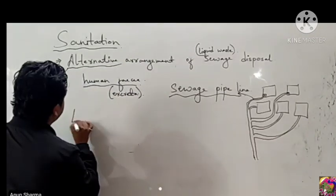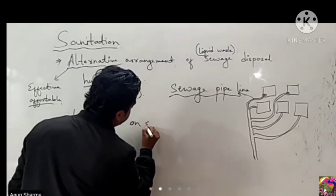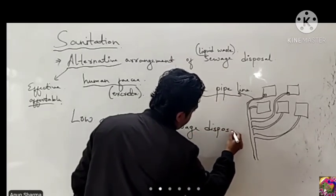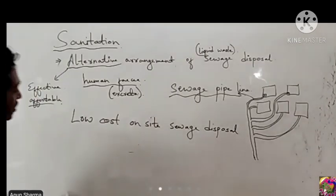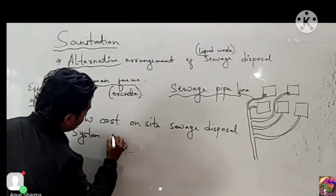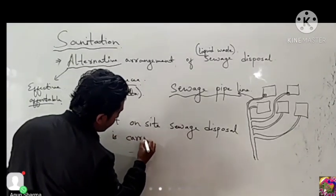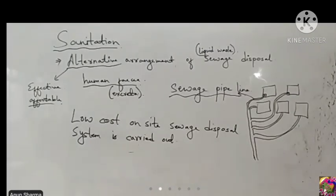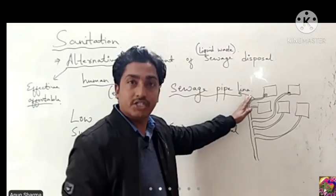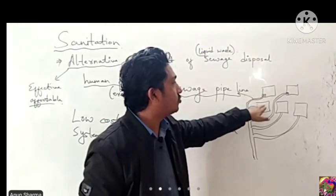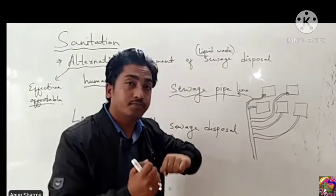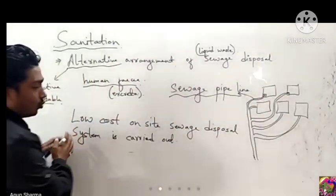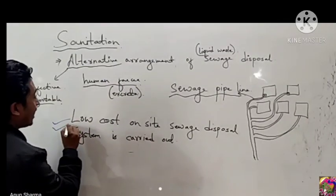Low-cost on-site sewage disposal means disposal at the same place, without using sewage pipelines. The pipeline system requires pipes, digging of land, and removal of waste to certain places - all of which is of high cost. On-site means the waste is treated at that same location.